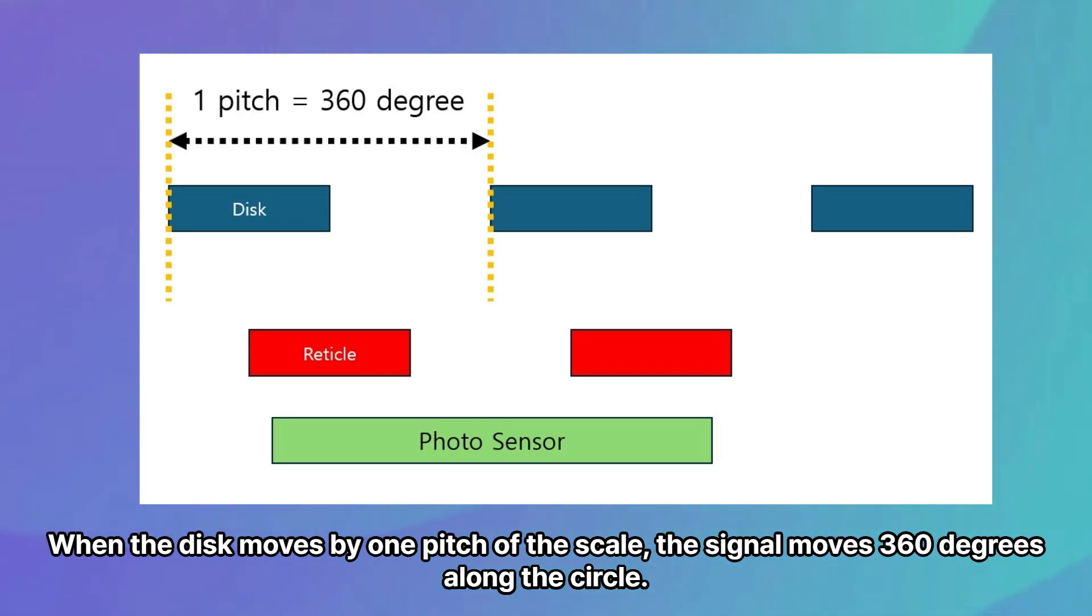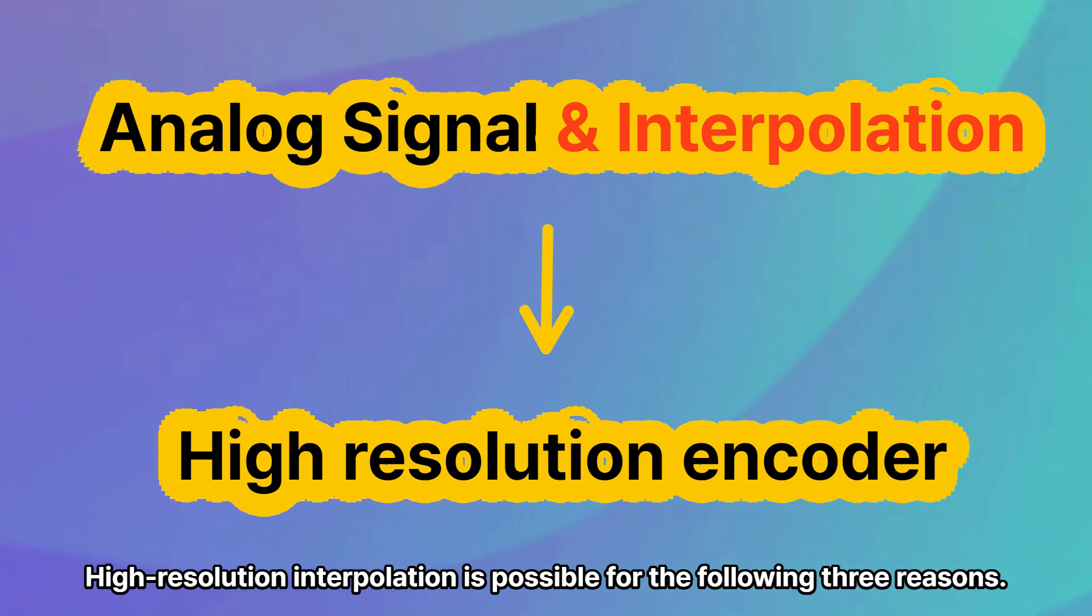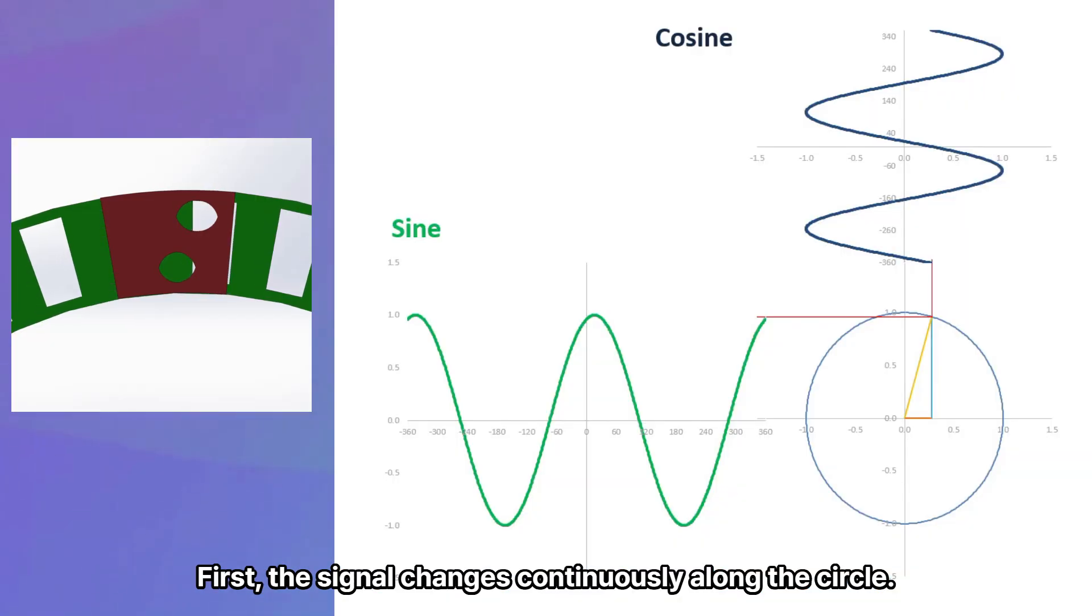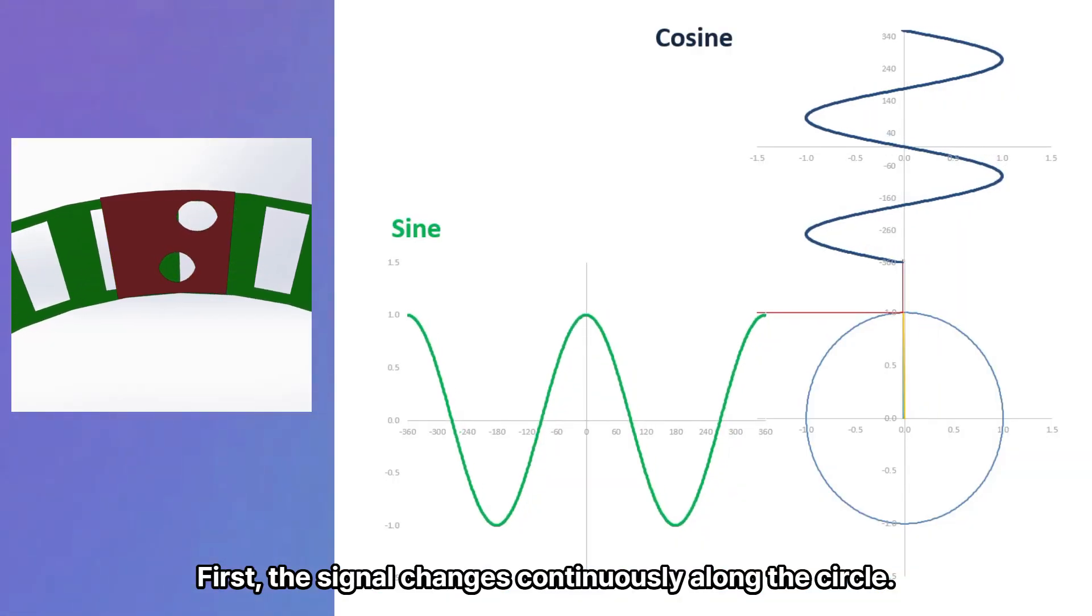When the disk moves by one pitch of the scale, the signal moves 360 degrees along the circle. High-resolution interpolation is possible for the following three reasons. First, the signal changes continuously along the circle.